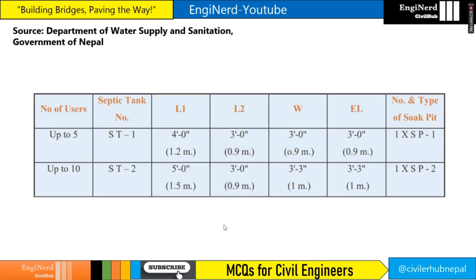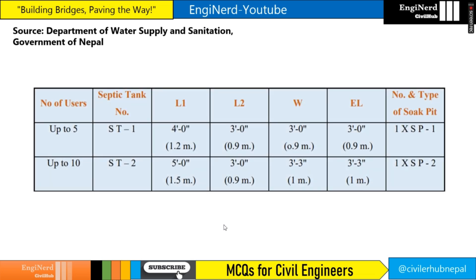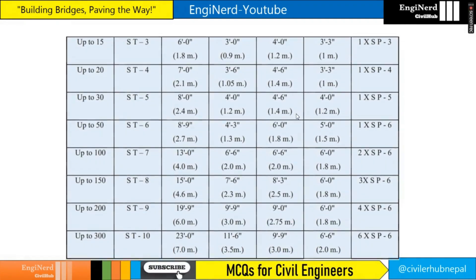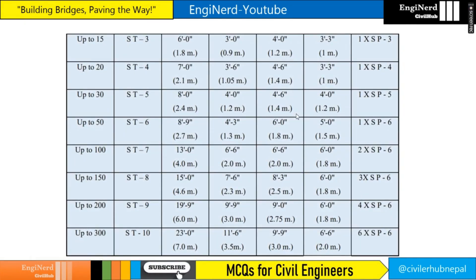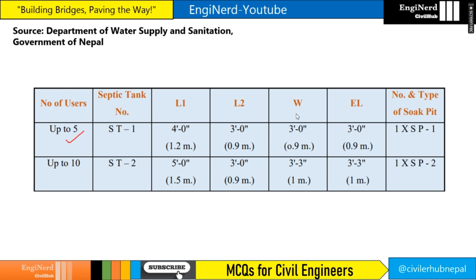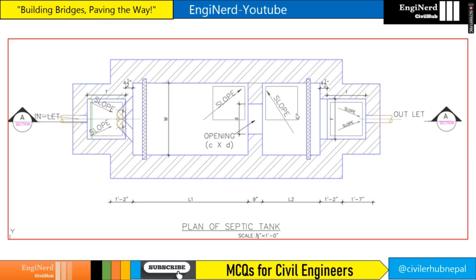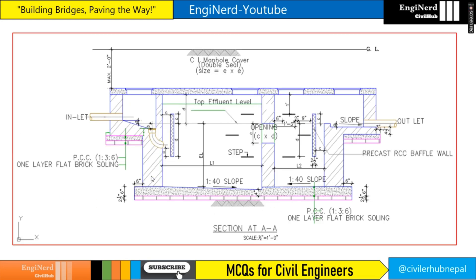If you consider the documents from the Government of Nepal at DWSS, here is the schedule of the septic tank. Up to five users: L1 and L2 are 4 feet and 3 feet, W is 3 feet, and elevation is 3 feet. For up to 10 users, the values of L1, L2, and W are as given in the figure and table.